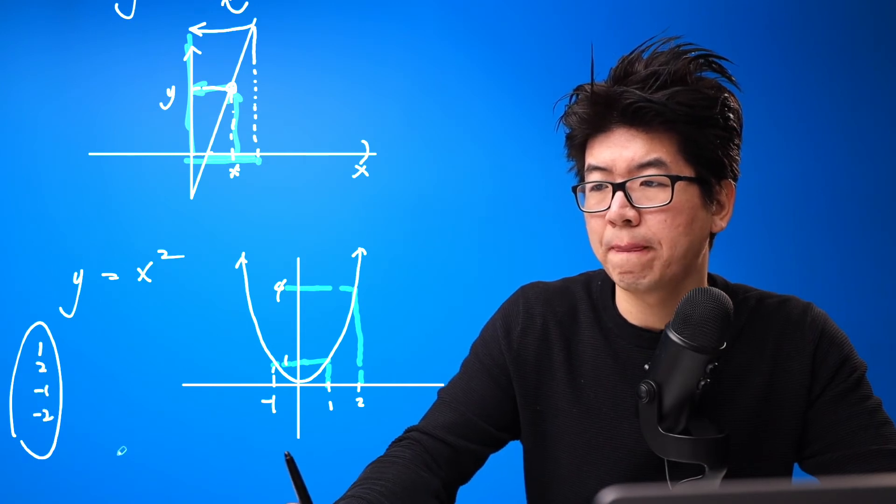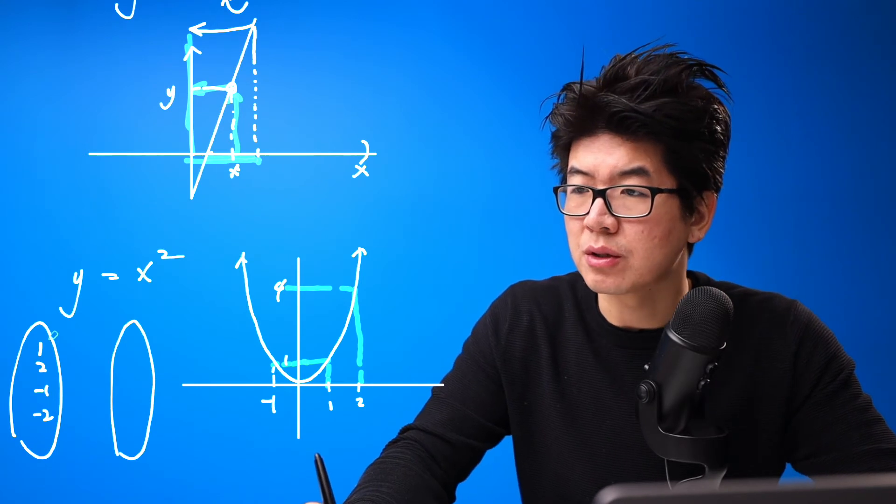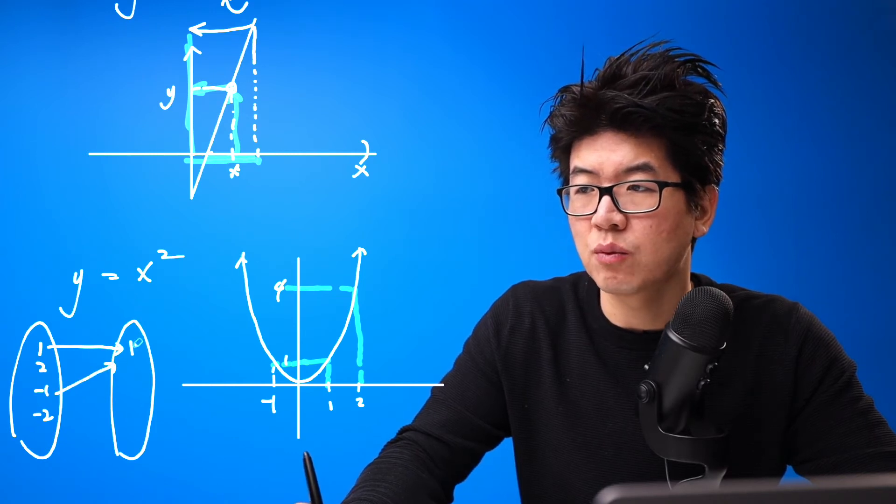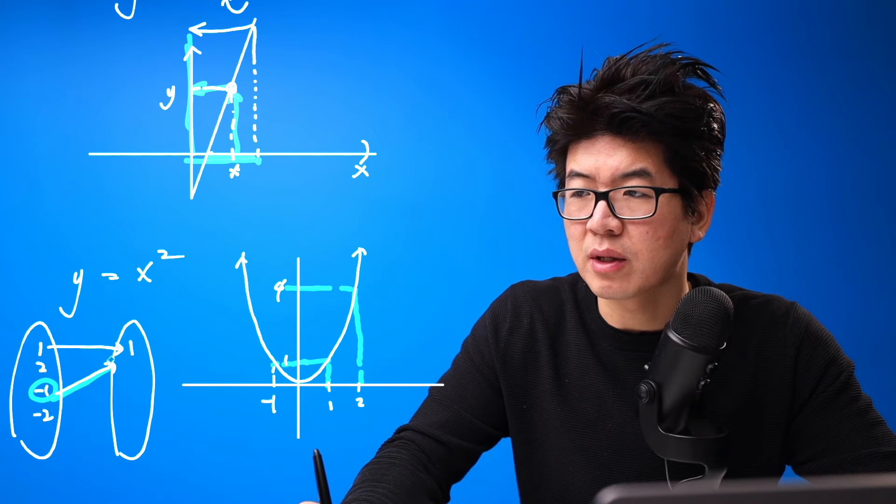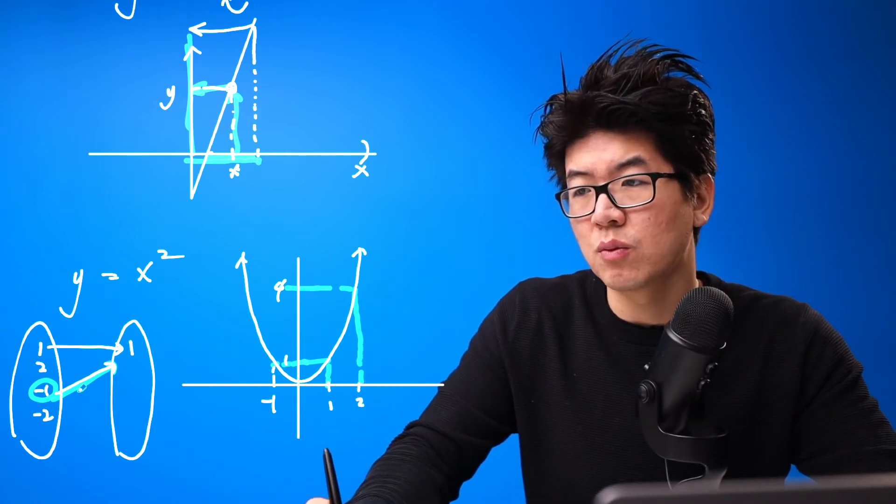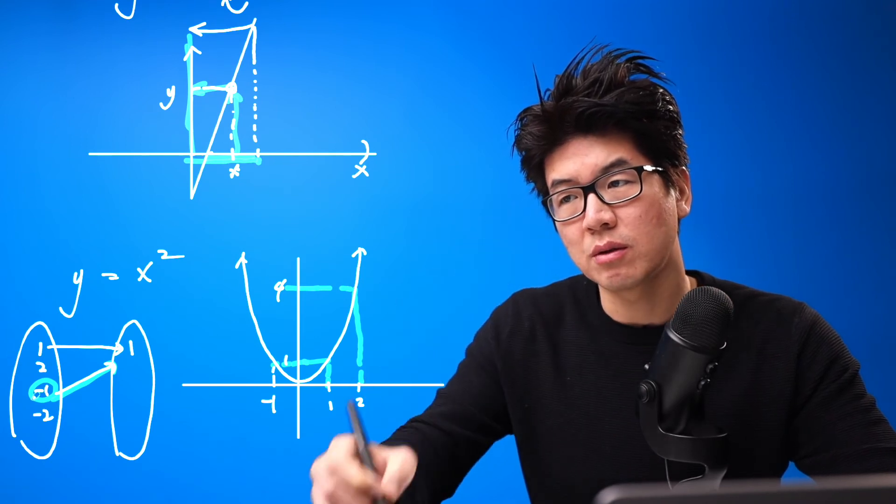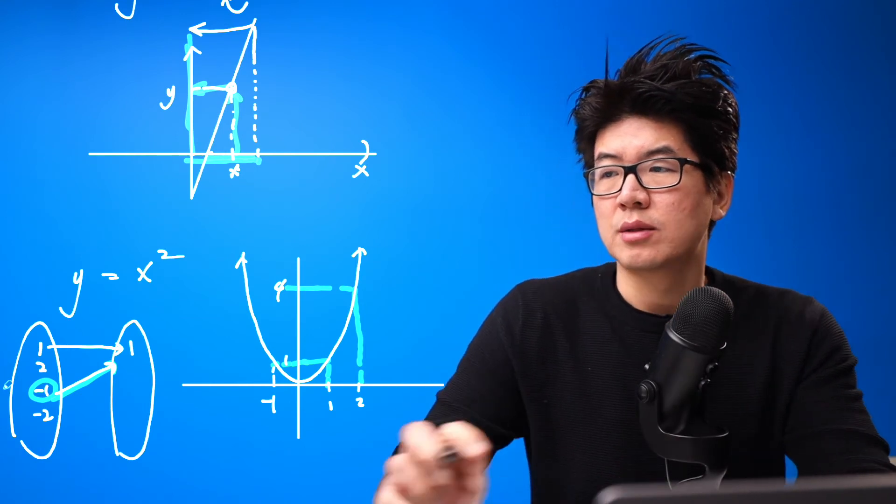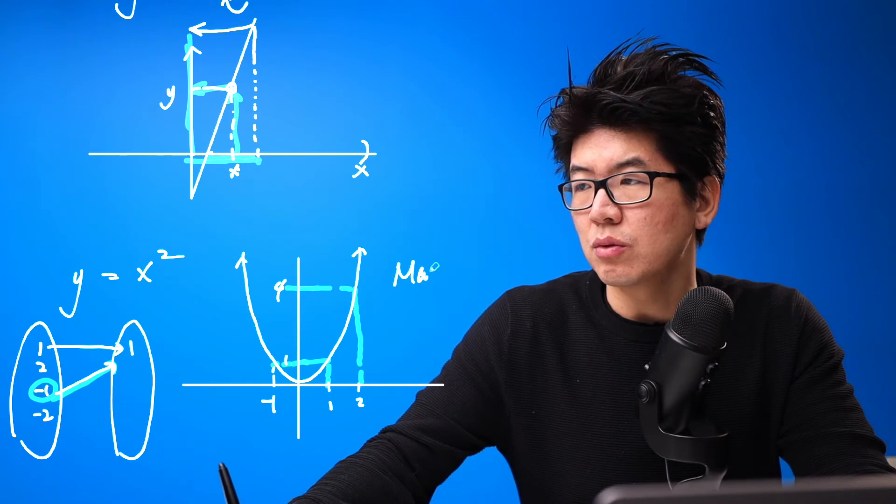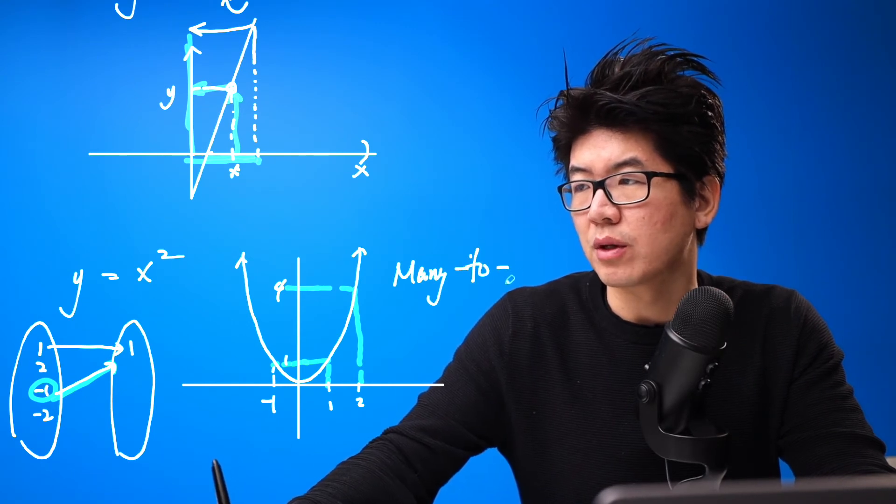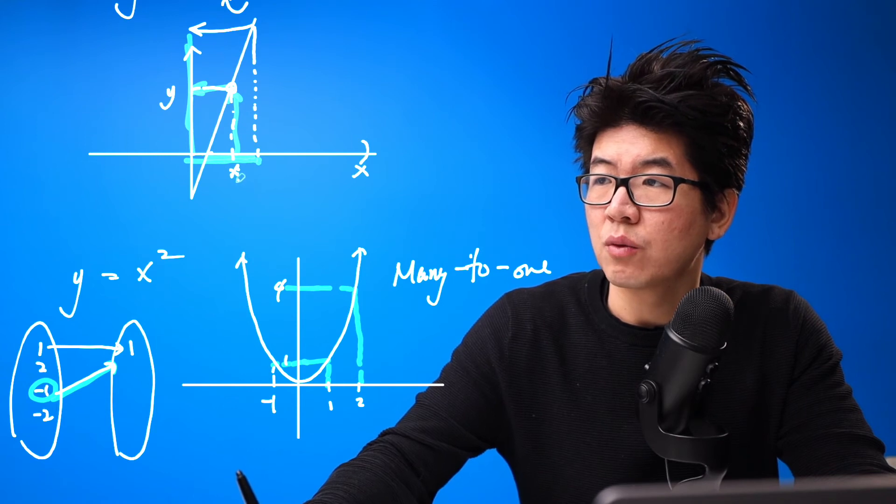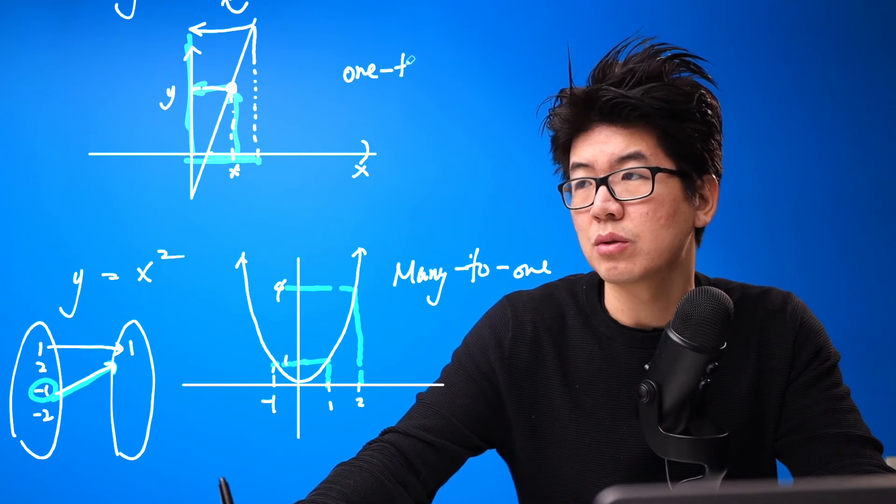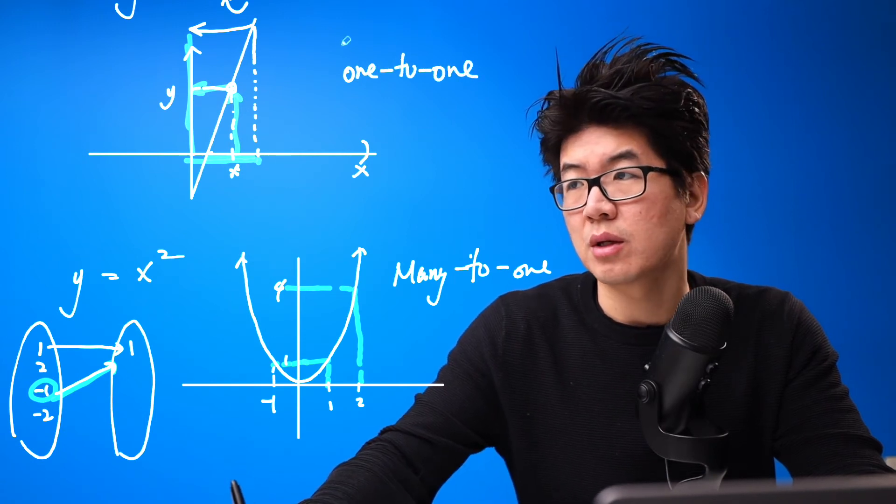So let's say 1, 2, negative 1, negative 2. Remember, the rule is: to be a function, each input must get assigned to one output. That gets assigned to 1; this also gets assigned to 1, but that input is still getting assigned to one specific value. We just can't have two arrows sticking out representing it's being assigned to two separate values. This has a unique name: this is called a many-to-one function. This is called a one-to-one function.